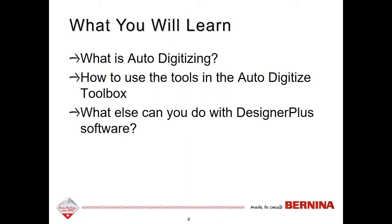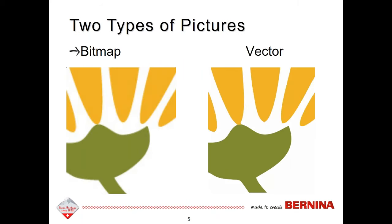Autodigitizing is creating stitches from pictures. There are two basic types of pictures: a bitmap and a vector. When you blow up a bitmap, you can see how fuzzy it becomes — bitmaps lose quality when you change the size. Vector artwork is drawn in a computer program, so it has nice clean lines and you can increase the size without decreasing the quality. In V9, we can process both types of pictures.